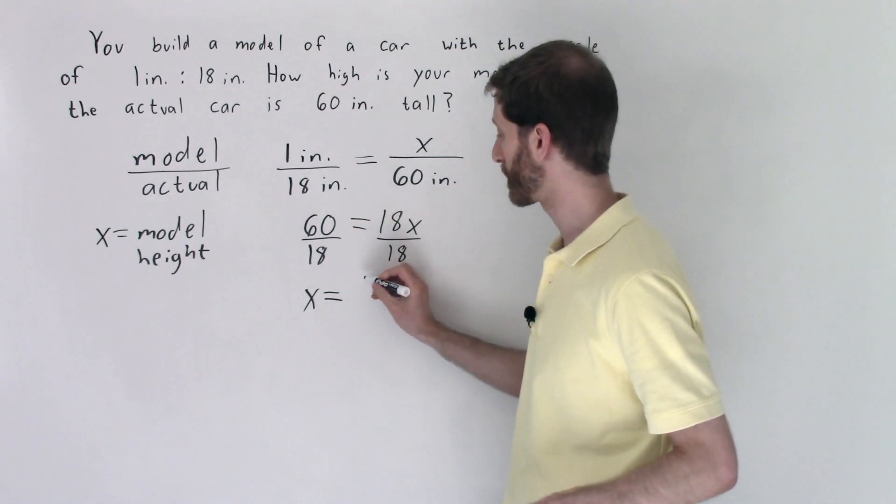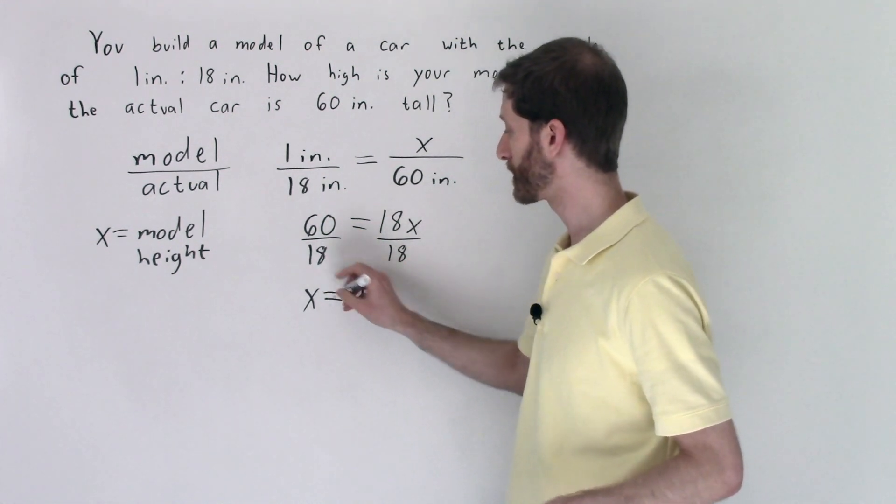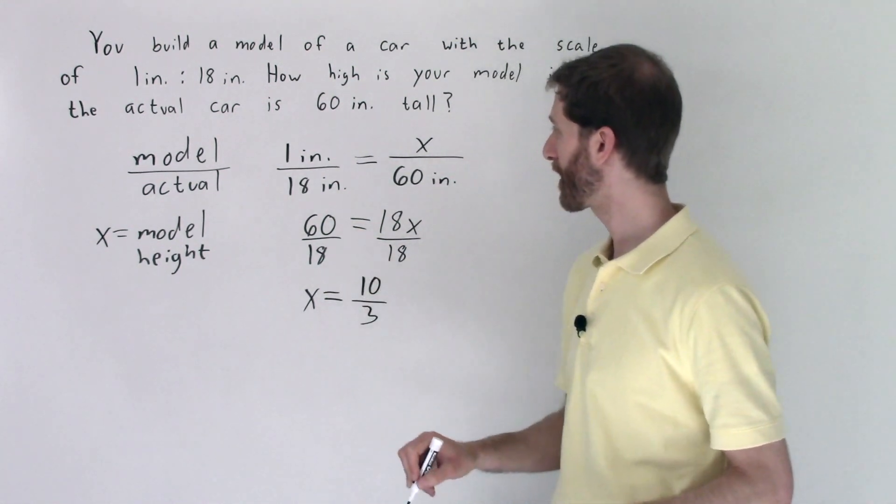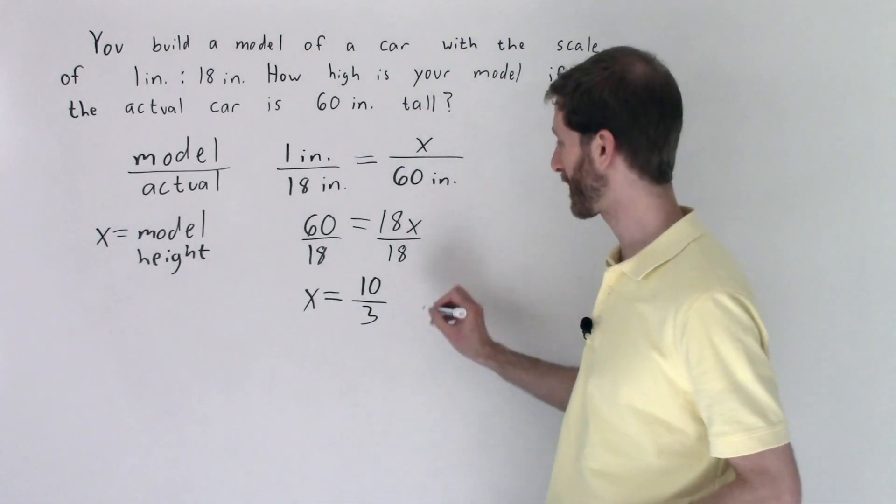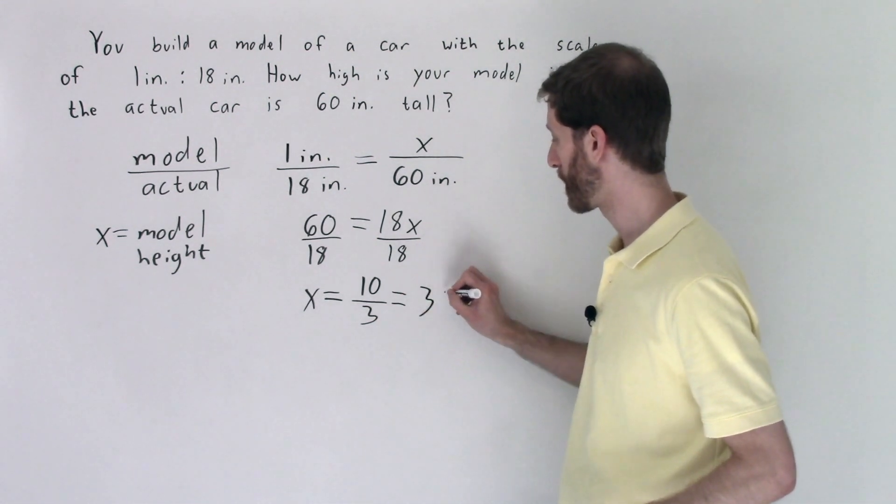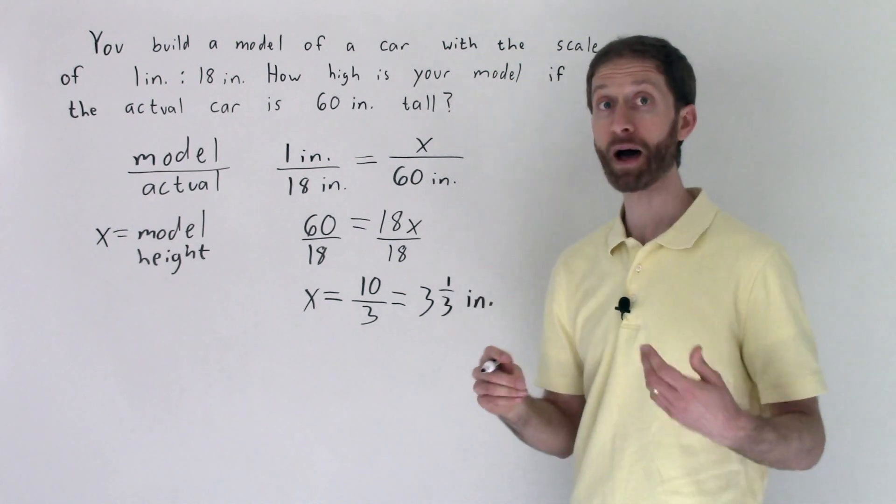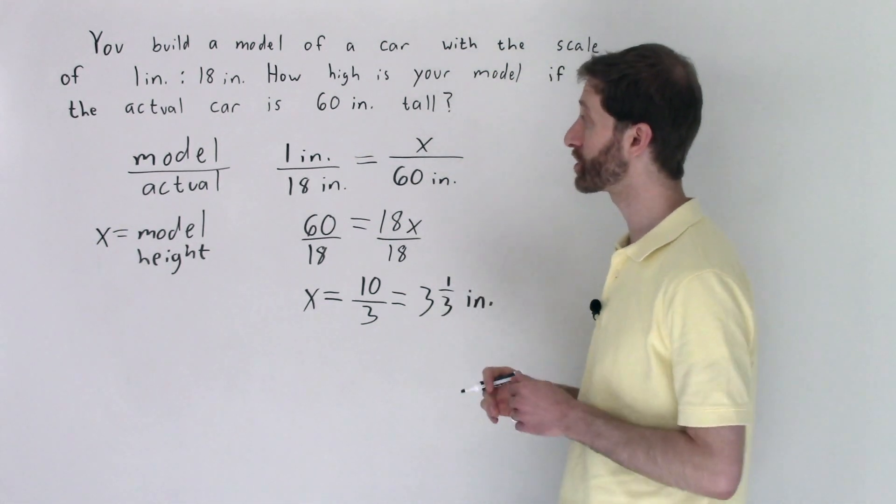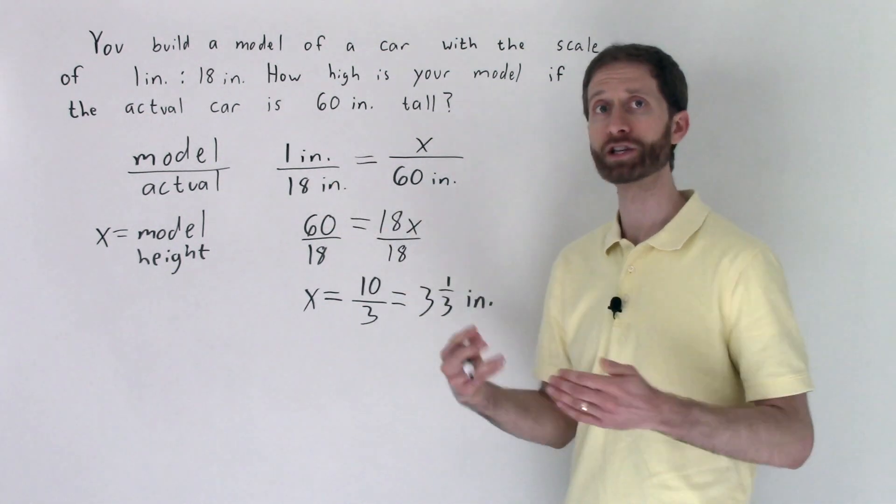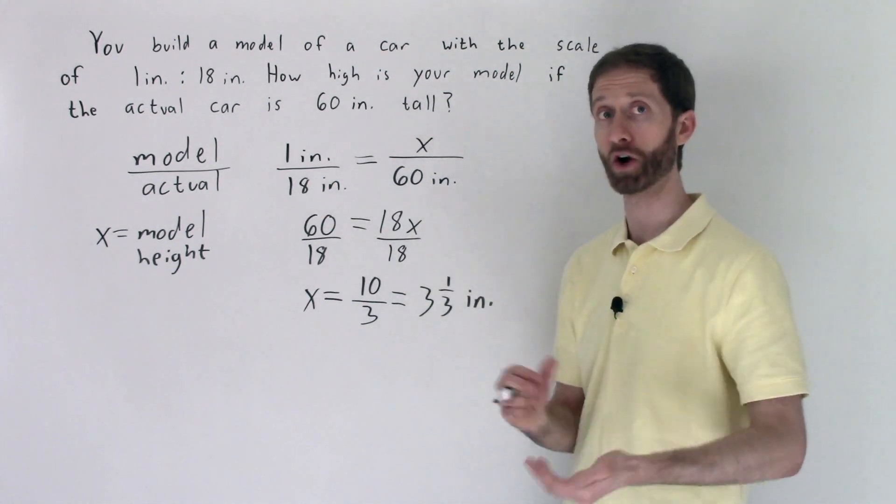So we have 10 thirds inches. Well I think that's better read as three and one third inches. So that means the height of your model needs to be three and a third inches to correspond to a one inch to 18 inch model to actual car ratio.